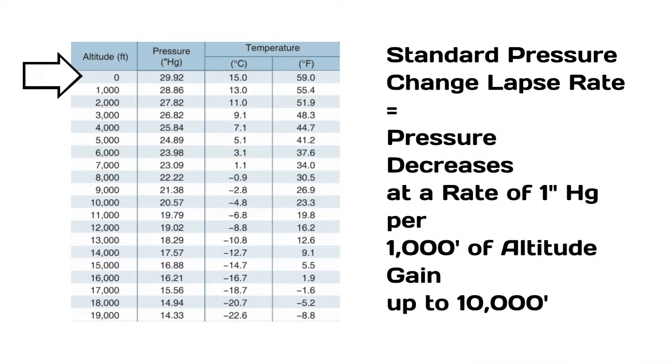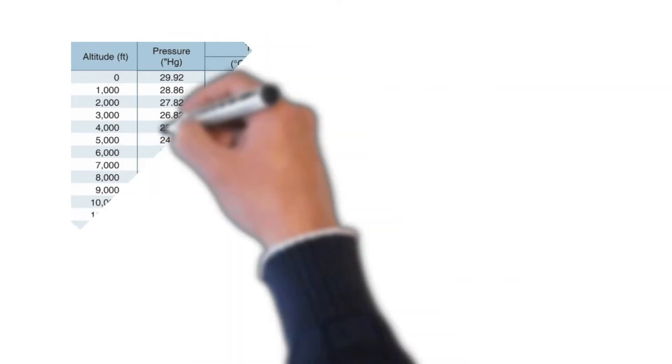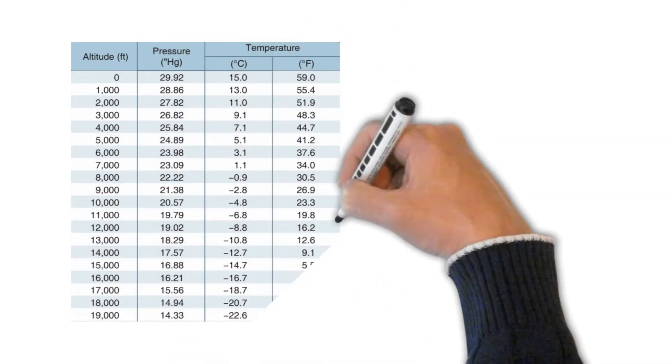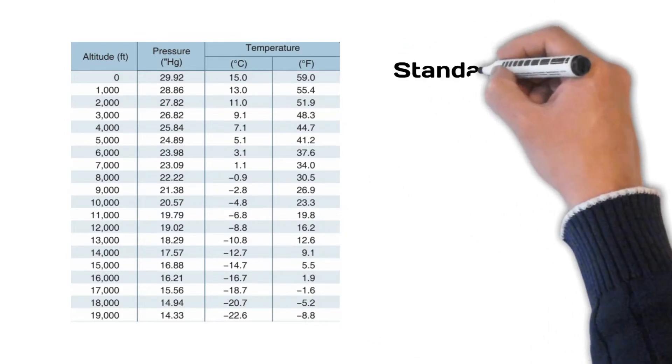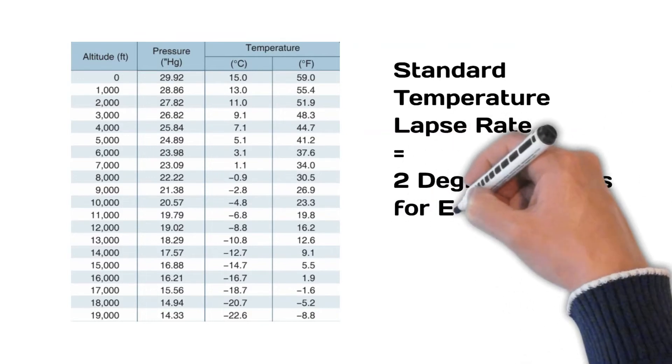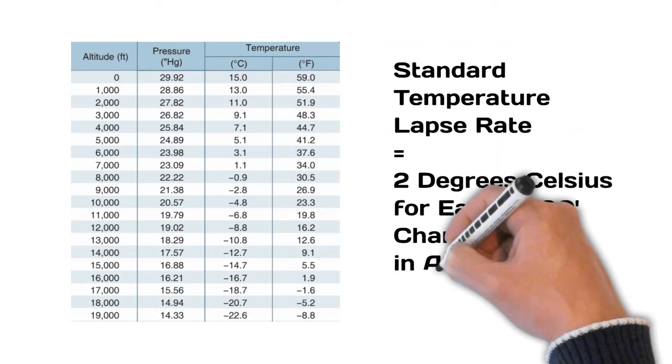Density altitude is affected by temperature changes as well. The standard temperature lapse rate is two degrees Celsius per 1,000 foot change in altitude up to 36,000 feet, according to the pilot's handbook of aeronautical knowledge. Temperature will decrease two degrees Celsius for each 1,000 foot increase in altitude.